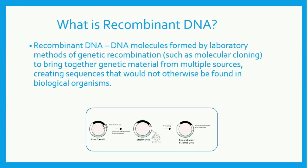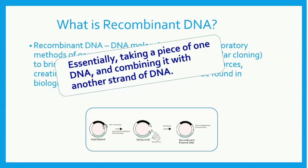What is recombinant DNA? The technical definition is DNA molecules formed by laboratory methods of genetic recombination, such as molecular cloning, to bring together genetic material from multiple sources, creating sequences that would not otherwise be found in biological organisms. This definition can be boiled down to taking one piece of DNA and combining it with another strand of DNA.